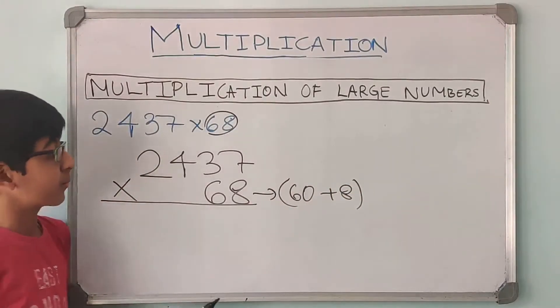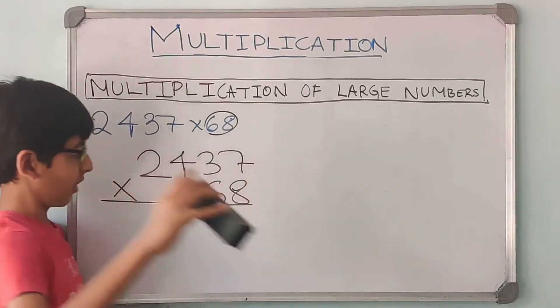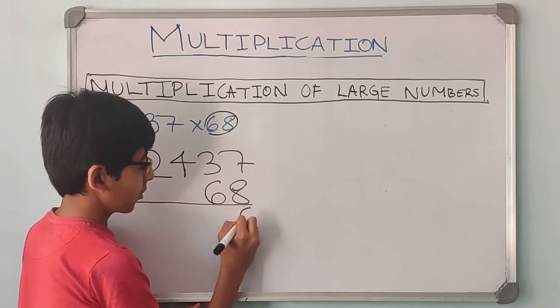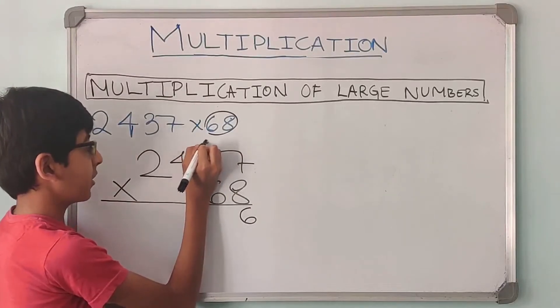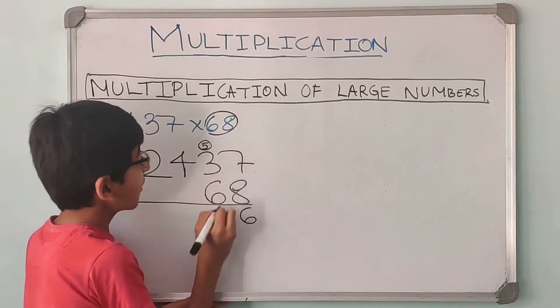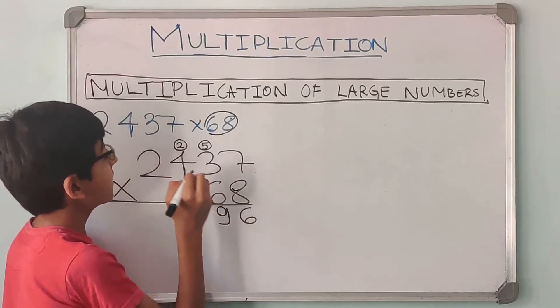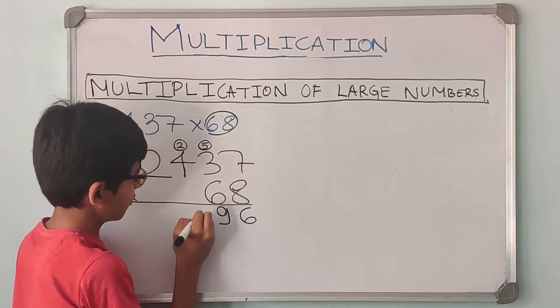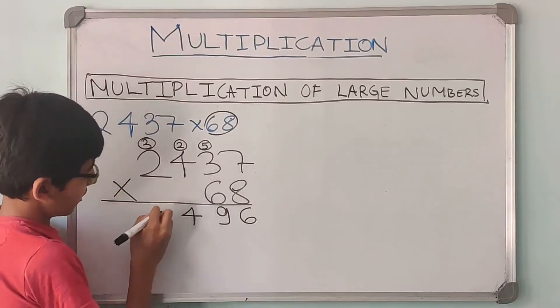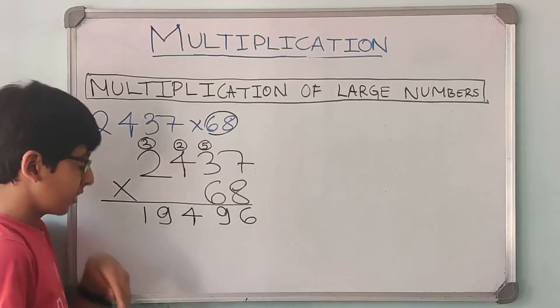Now 68 is the same as 60 plus 8. So first we are going to multiply by 8, then we will multiply by 60, then we will add them. We don't need to write this. So first we will multiply by 8. 8 into 7 is 56, so the 6 comes down and the 5 is carry forward. And 8 into 3 is 24. 24 plus 5 is 29. So write the 9 down and 2 carry forward. 8 into 4 is 32 plus 2 is 34. 4 comes down, 3 carry forward. 8 into 2 is 16 plus 3 is 19.